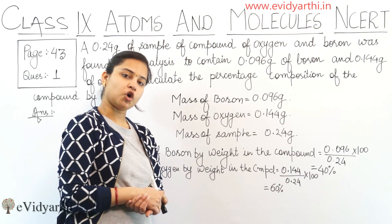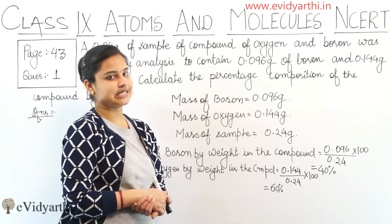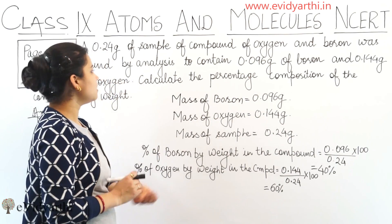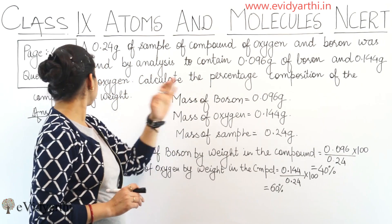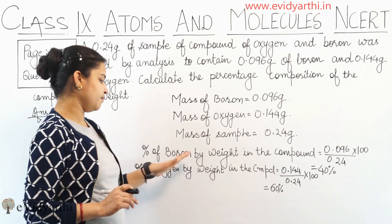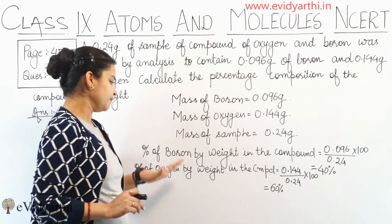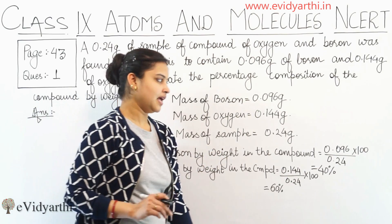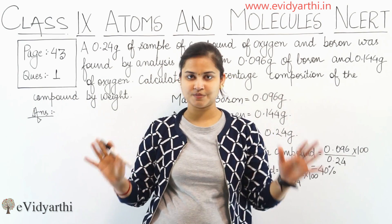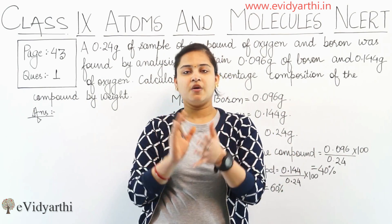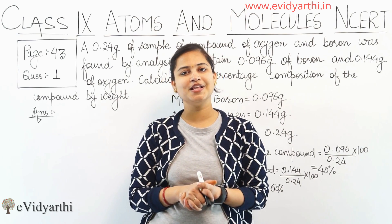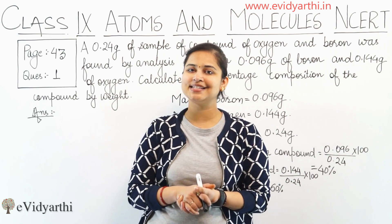So the compound composition by weight is 40% boron and 60% oxygen. I hope it is clear to all of you. I have told you that boron is 40% and oxygen is 60%, and I hope you all are clear about what I have done in this session. This was all about this session, and it is Rakhi saying goodbye and take care.